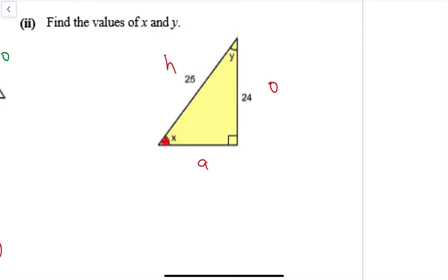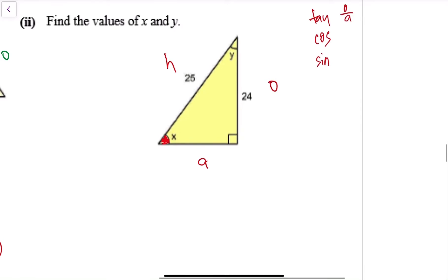I need to make a decision once again: O over A, A over H, O over H. I have H, I have O, so I will use sine. Sine x equals 24 over 25. X equals sine inverse of 24 divided by 25.